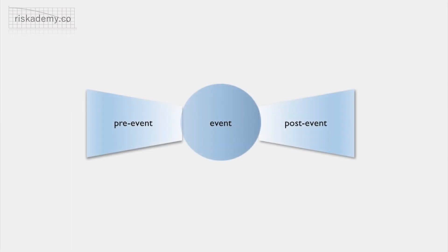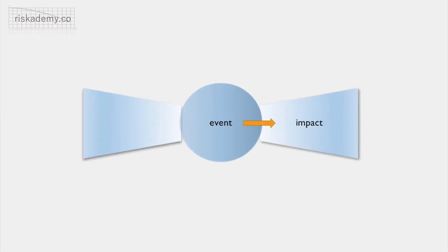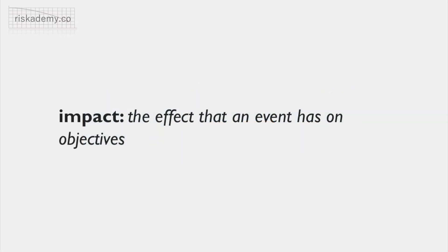Threats and vulnerabilities are considered as pre-event factors on the left-hand side of the risk bowtie, as these create the conditions that allow an event to occur. If an event were to occur, we have to consider its effects and the specific impact on the organization and its objectives, which is the right-hand side of the bowtie. Impact is highly contextual and it is not always the immediate effect of the event that is being considered. Instead we should consider the effects that the event has on the organization's objectives, which might be a combination of physical effects, reputational damage and loss of market share. Remember, risk is based on the effect of the event on the organization's objectives, not on the magnitude of the event itself.